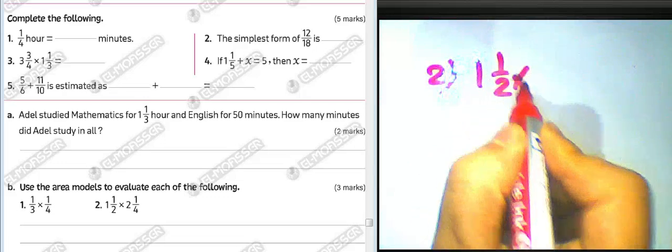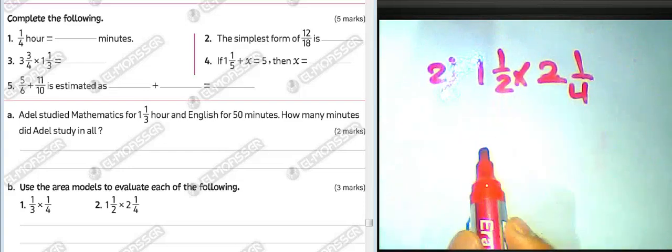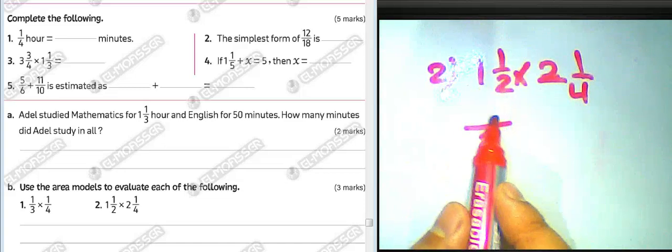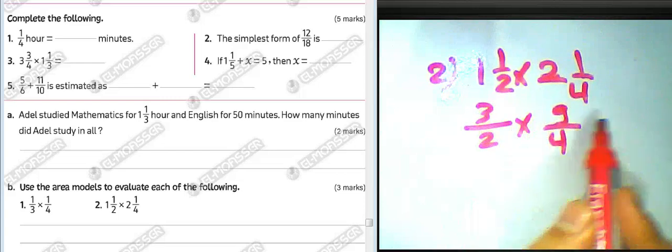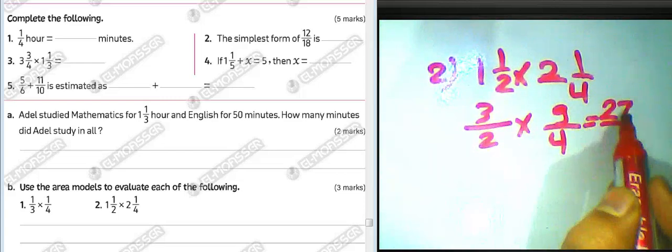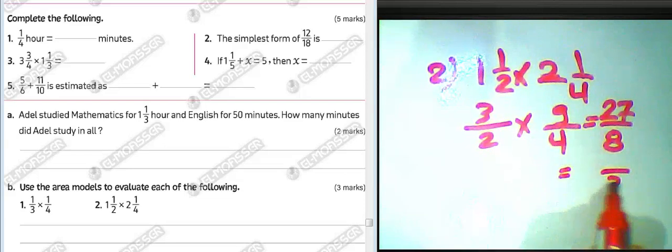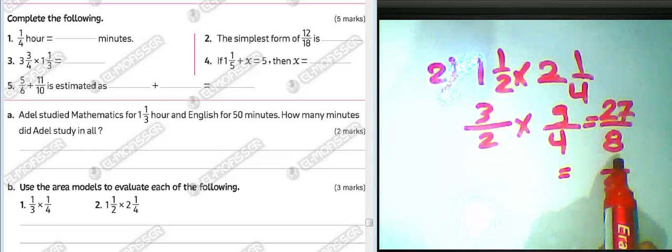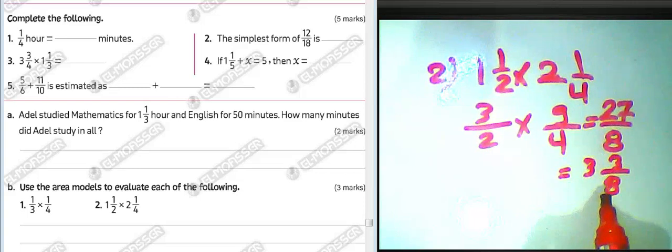For one and a half multiplied by two and one over four: convert to improper fractions. One and a half equals three over two. Two and one over four equals nine over four. Three times nine equals twenty-seven, two times four equals eight. Twenty-seven divided by eight: three times eight equals twenty-four, remainder three. The result is three and three over eight.